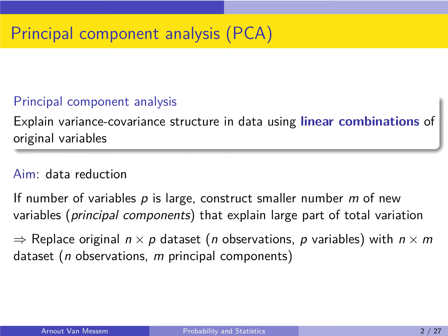We will replace the original dataset, a dataset of size n times p — n observations for p variables — with a smaller dataset of size n times m. We still have n observations, but we will only use m principal components, m new variables. The goal is to construct those new variables in such a way that we reduce the dimensionality a lot, but still explain most of the covariance of the data.